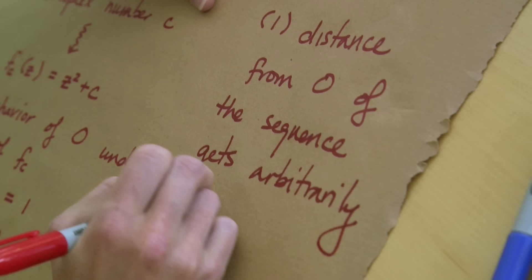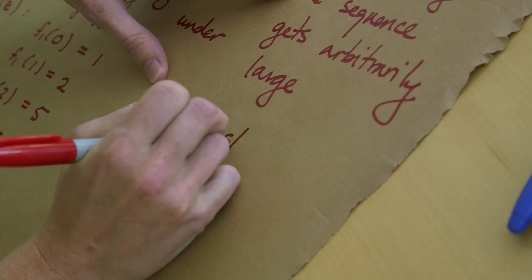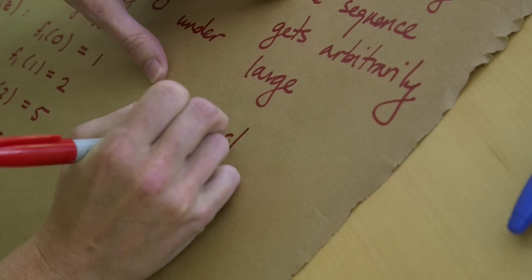The first option is that the distance from zero of the sequence we get gets arbitrarily large. That means it blows up, it gets as large as you want it to be. This is what people mean when they say that the iterates go to infinity. They mean that the size of the number in this sense goes to infinity.